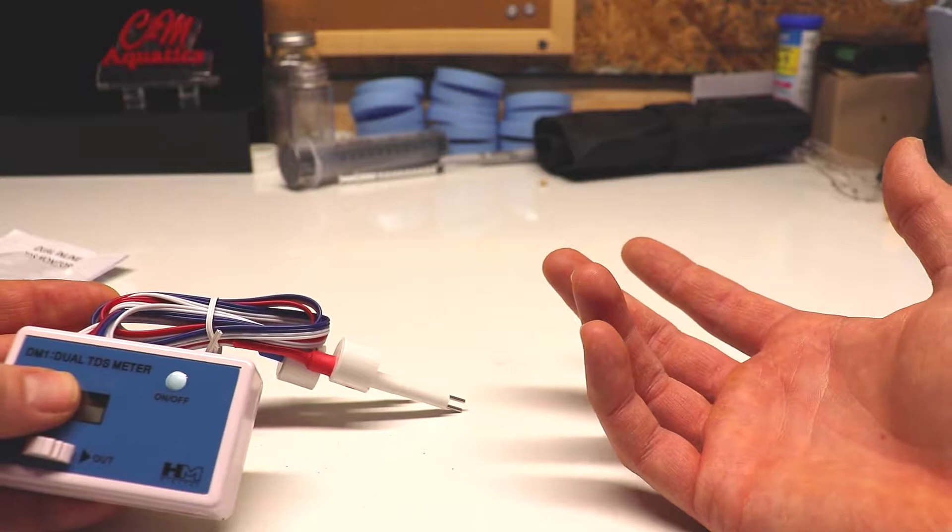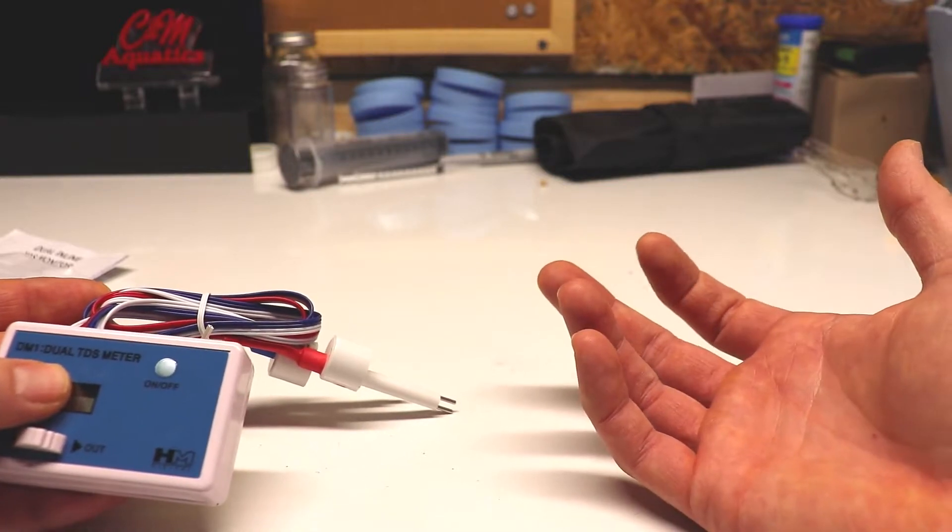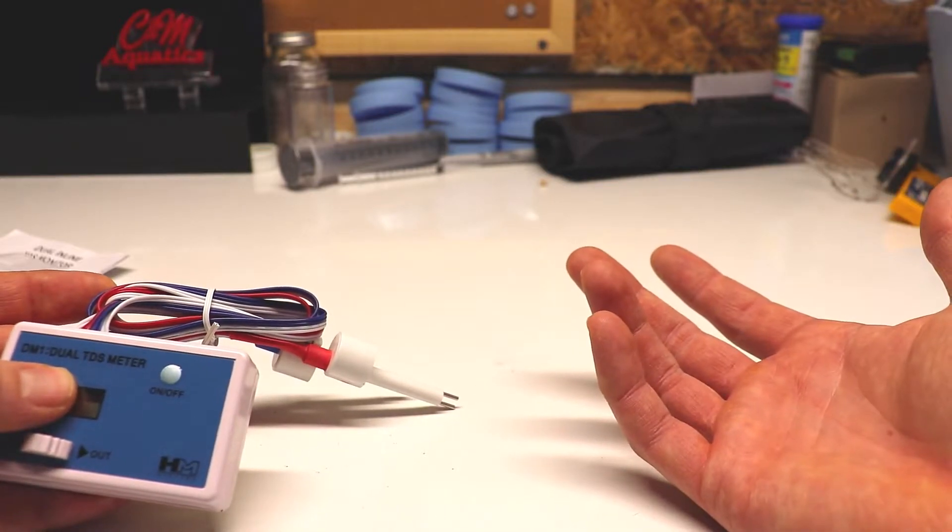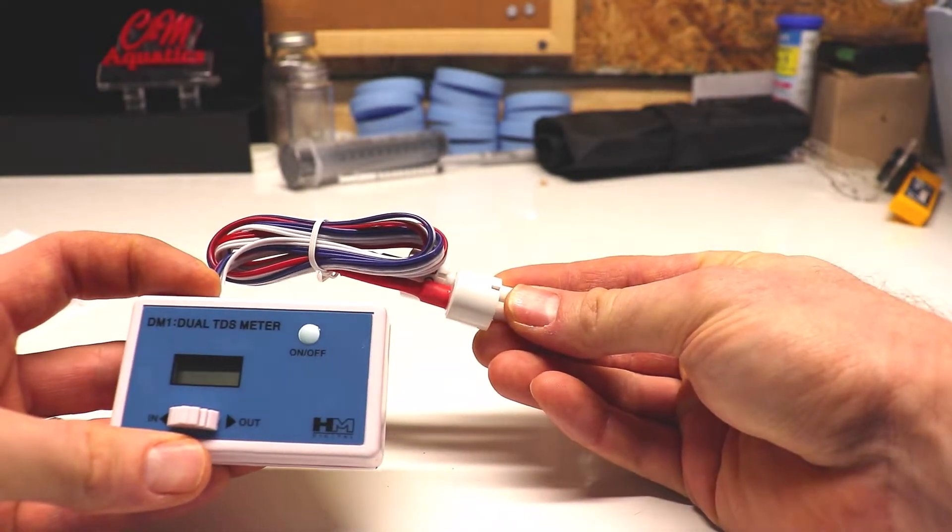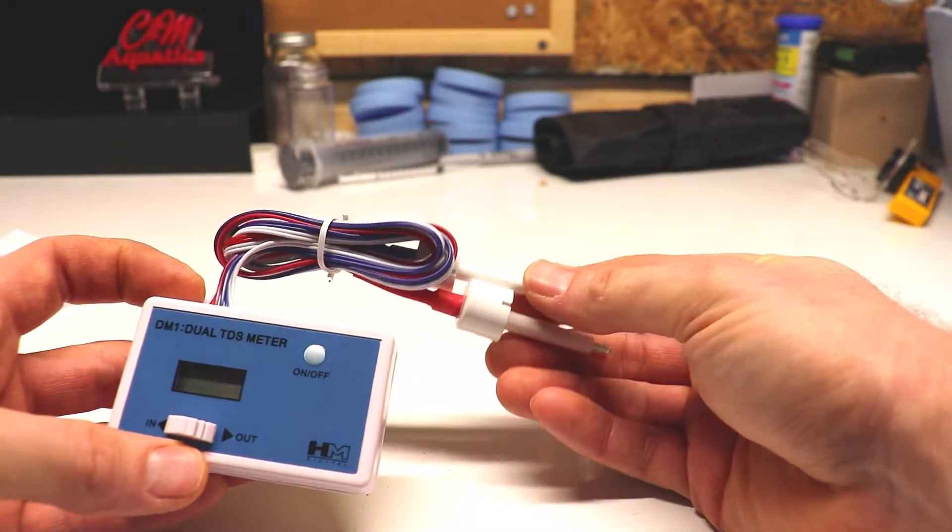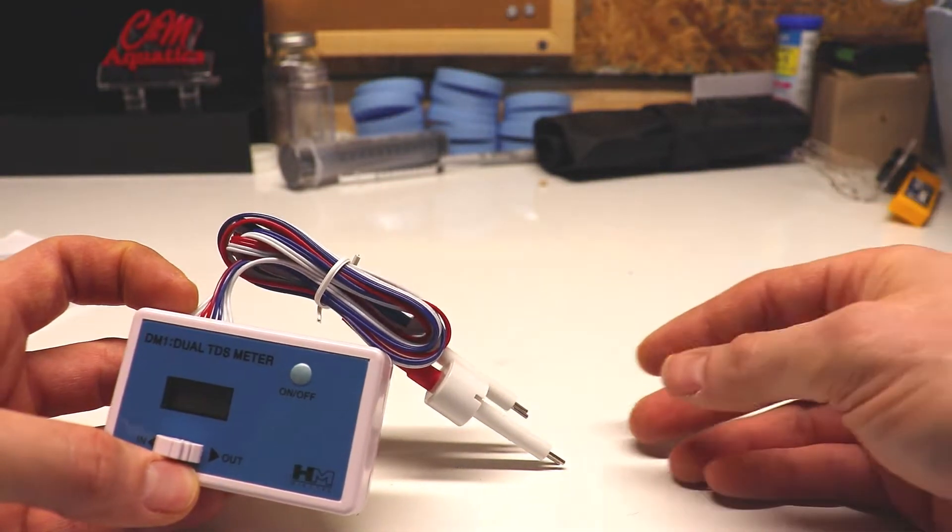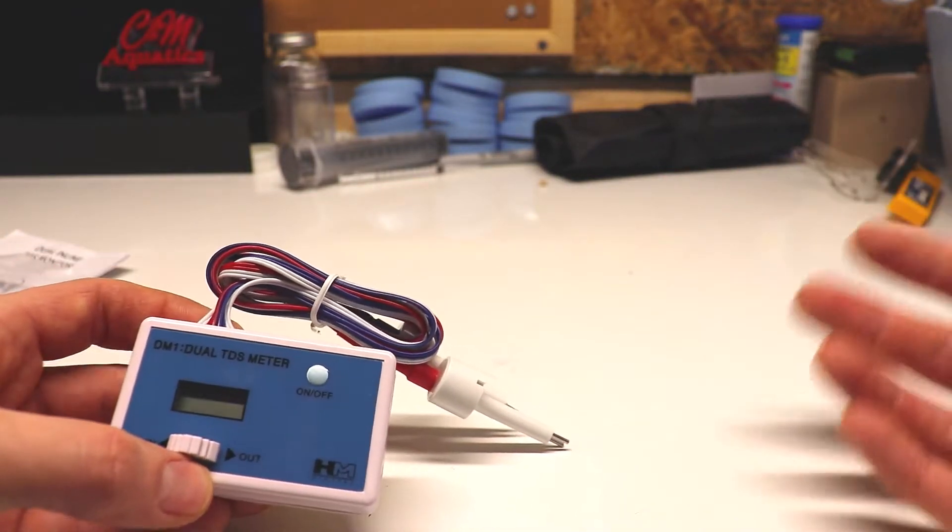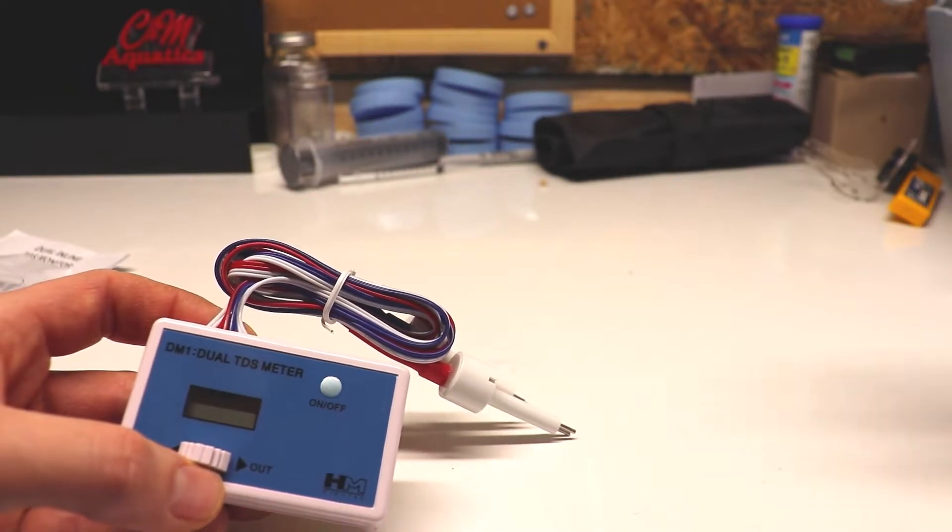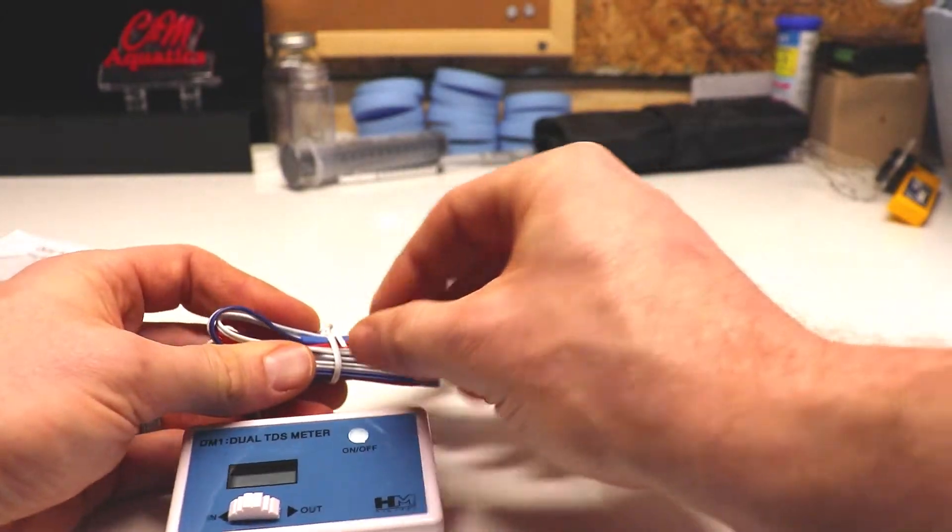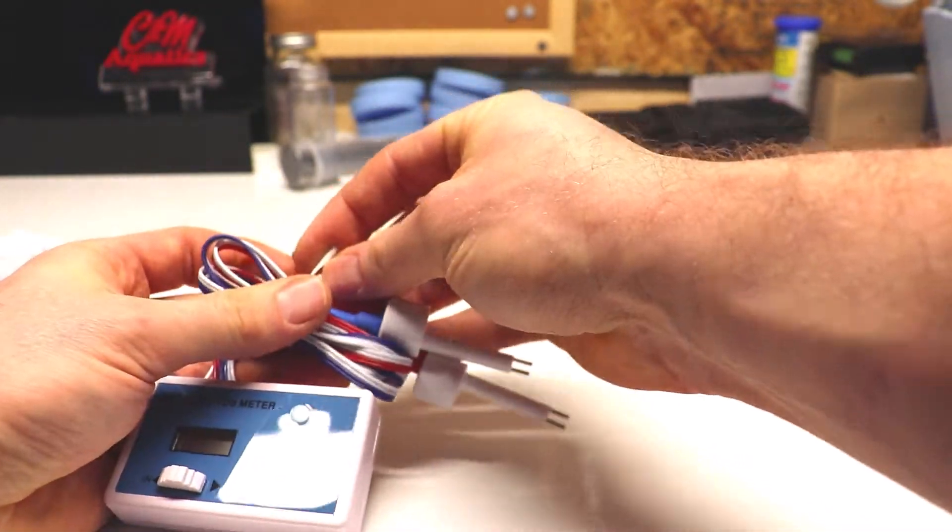I'm using the filters a lot and going through a lot of RODI water, so I thought I would get a TDS meter to help me see when I need to change my filters, to make sure I'm not changing them too soon so I'll save money that way, or maybe I'm not changing them enough. This will help me do that.